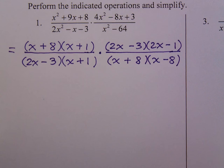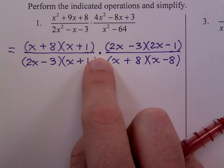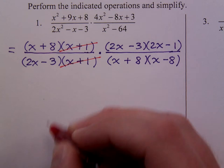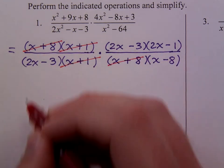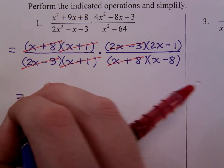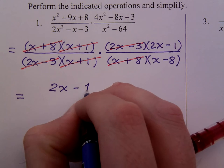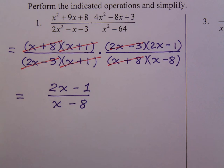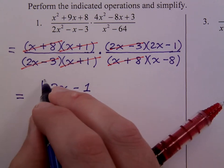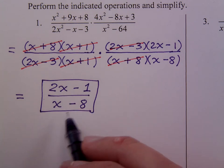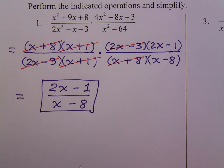On the other side, we factor as 2x minus 3 times 2x minus 1. This denominator is the difference of squares, x plus 8 times x minus 8. Now that we have this multiplication, we look for common factors to reduce. The x plus 1s will reduce, x plus 8 in the numerator and denominator, and a common factor of 2x minus 3. The only factors we have left are 2x minus 1 in the numerator and x minus 8 in the denominator. Please don't try to reduce the x's away, because the x's are not factors that are common to both the numerator and denominator.